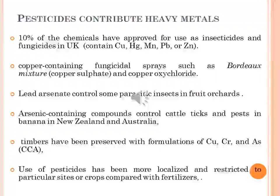Several common pesticides used in agriculture and horticulture in the past contain substantial concentrations of metals. Pesticides include herbicides, fungicides, rodenticides, molluscicides, and bactericides to kill insects and weeds. In the recent past, about 10% of chemicals approved for use as insecticides and fungicides in the UK were based on compounds containing copper, mercury, manganese, lead and zinc. Examples include copper-containing fungicidal sprays such as Bordeaux mixture, which contains copper sulphate and copper oxychloride.